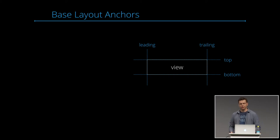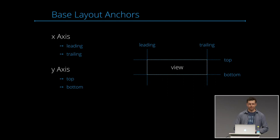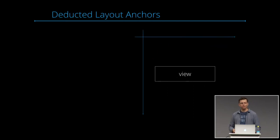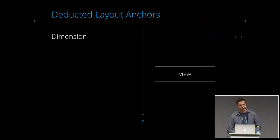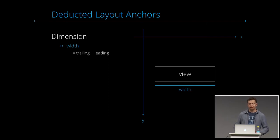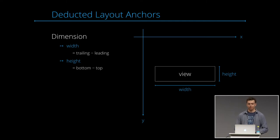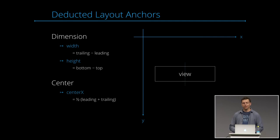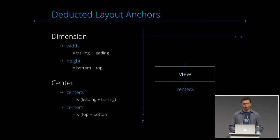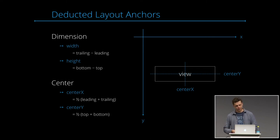These four layout anchors — leading, trailing, top, and bottom — are the base layout anchors. We have two horizontal anchors along the x-axis (leading and trailing) and two vertical anchors along the y-axis (top and bottom). From these base anchors we can derive others: width is the difference between trailing and leading; height is the difference between bottom and top; centerX is the average of leading and trailing; centerY is the average of top and bottom. We also have special anchors for text-displaying views: firstBaseline and lastBaseline layout anchors.